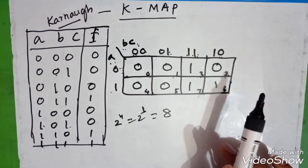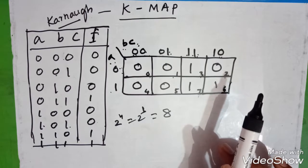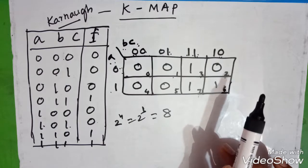Next class also we will see the 4 variable K-maps. If possible we will see 5 variable K-maps and how to minimize the expression using these K-maps.